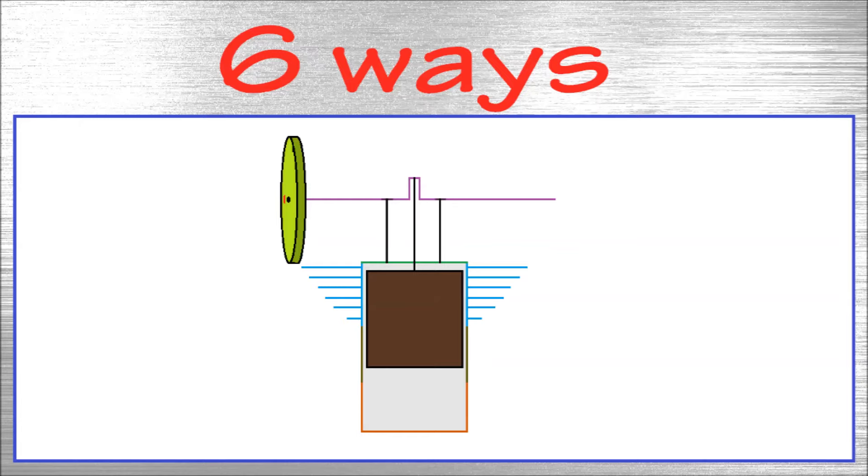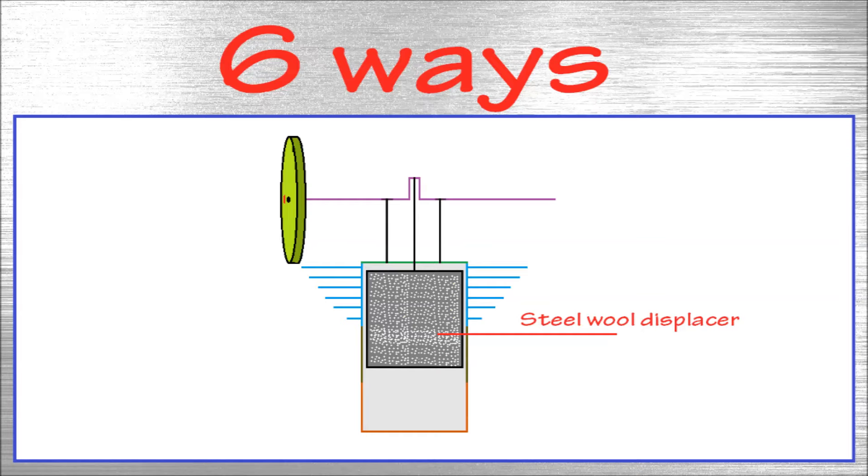This can easily be done by making the displacer out of steel wool instead of a solid material. The steel wool has a lot of surface area to temporarily store heat, which is reused in the next stroke.